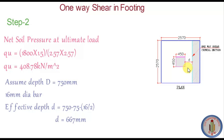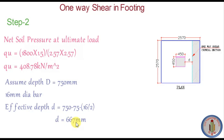In the plan of the footing all sizes are shown. The critical section for one-way shear is at a distance d from the face of the column, where d is the effective depth, which we calculated as 667 mm.